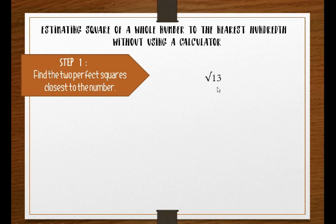The two perfect squares closest to 13 are 9 and 16. The number which we are estimating should be between both perfect squares.